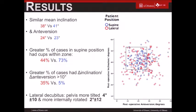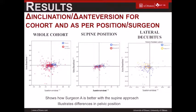Looking at the combined data of all surgeons, supine versus lateral, the means were comparable, but critically, 73% of cups were in the safe zone in the supine position versus only 44% in the lateral position. This was associated with a much higher percentage of change in inclination and rotation in the lateral position — 35% versus 5%.